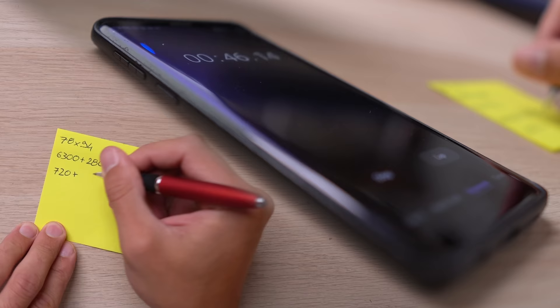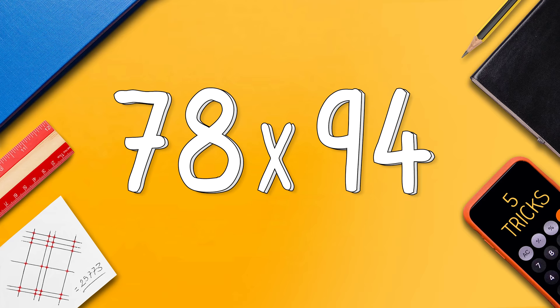In the beginning it took me 1 minute and 10 seconds to solve 78 by 94 but then I decided to try with the new method. I'm gonna do it on a green screen so you can see it.